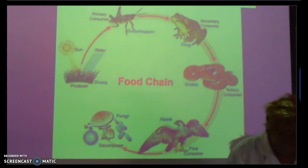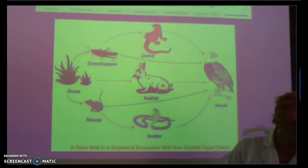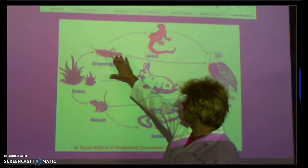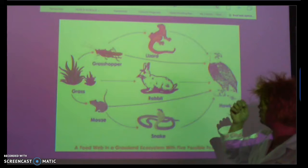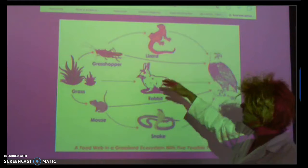Moving on to a food web. The food web is a little bit different. You can see we've still got our grass here. We've got the grasshopper, a rabbit, and a mouse that are the primary consumers. So we've got three primary consumers here. The mouse will eat grass or plant matter, the rabbit will eat grass, and the grasshopper will feed on the grass as well.